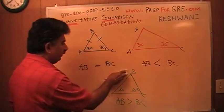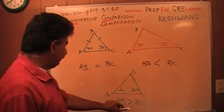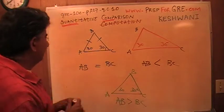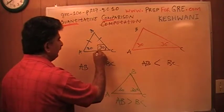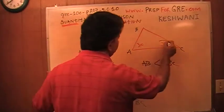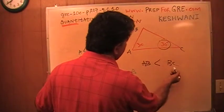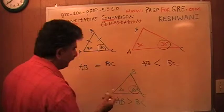So the bottom line is, it all depends on what this angle is. If this is 30, the answer is going to be C. If it's less than 30, the answer is going to be A. And if it's more than 30, it's going to be B.